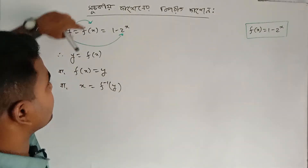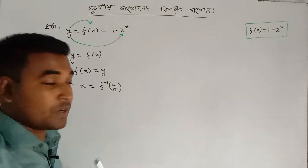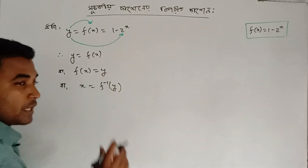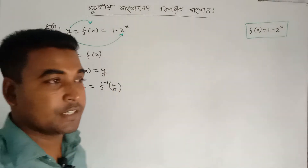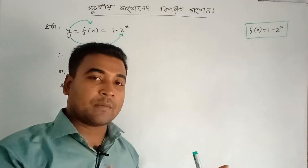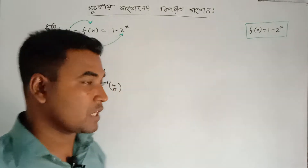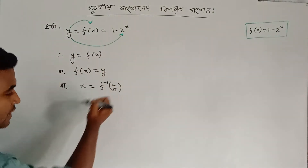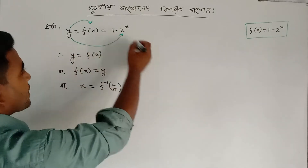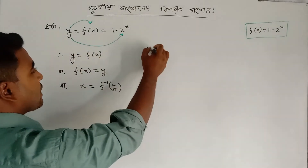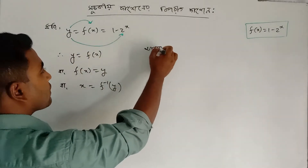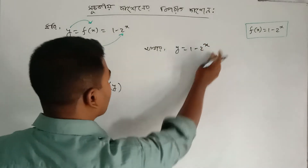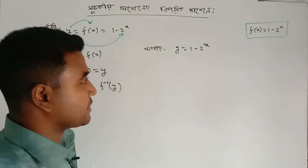We will see two assumptions happening with the inverse function. If we ask them, we must say the answer. We shall have x. We should look at y equal to 1 minus 2 to the power x.